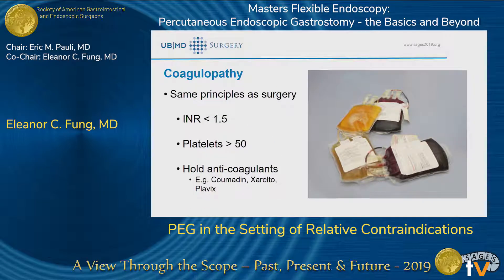I'm going to go through coagulopathy first. I really try to use the same principles as for any surgical procedures and ensure that the INR is less than 1.5 and platelets are greater than 50. If we need blood products to achieve that, I will transfuse the patient or give other products such as vitamin K. And as much as possible, I try to hold anticoagulants — things like Coumadin, Xarelto, and Plavix — according to current recommendations, or any therapeutic anticoagulation in general.